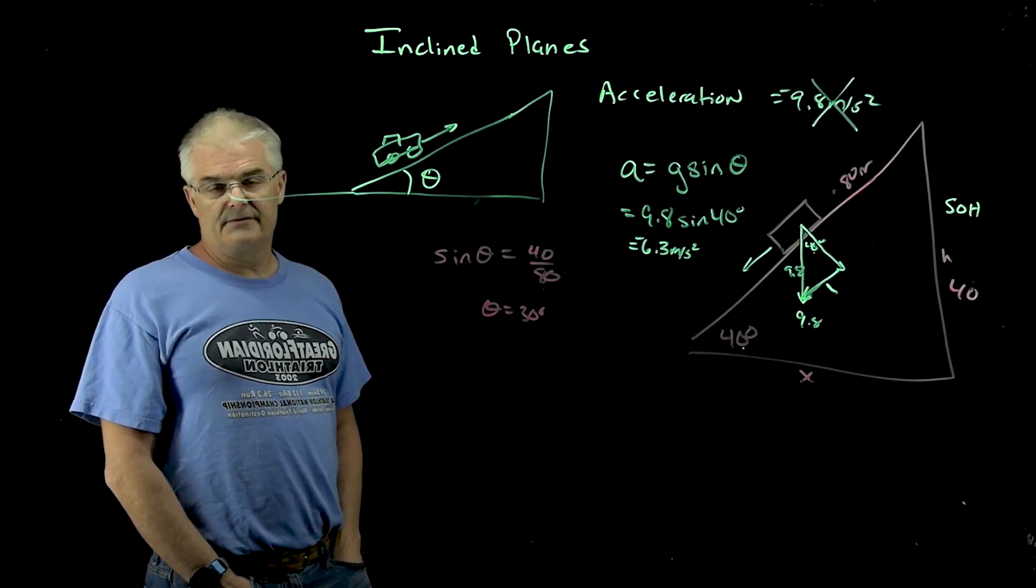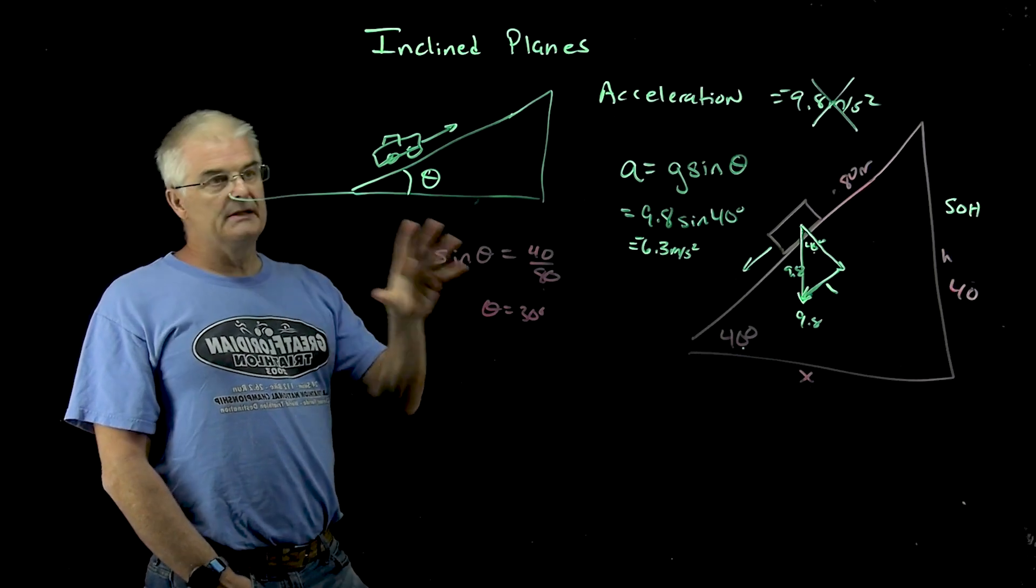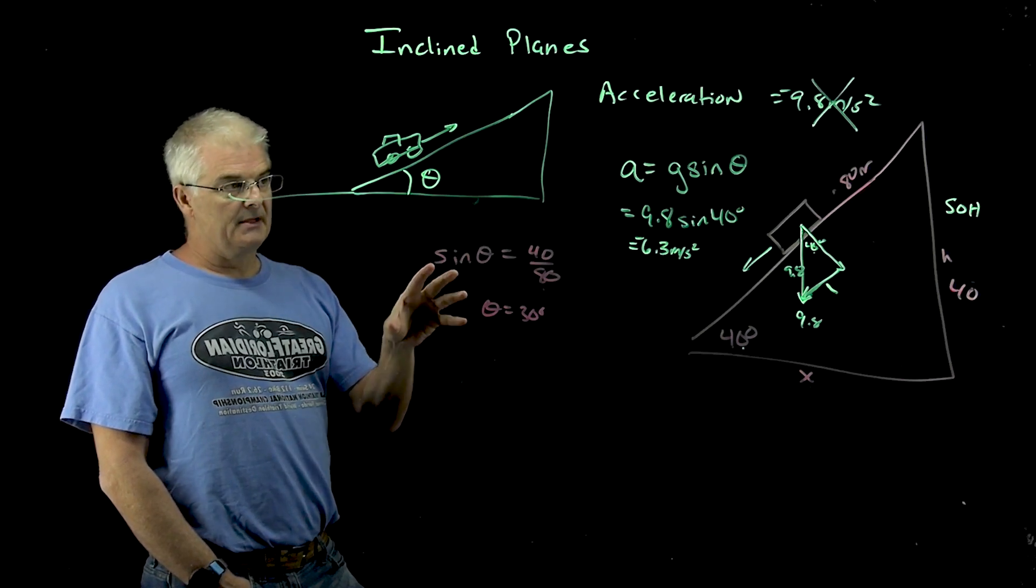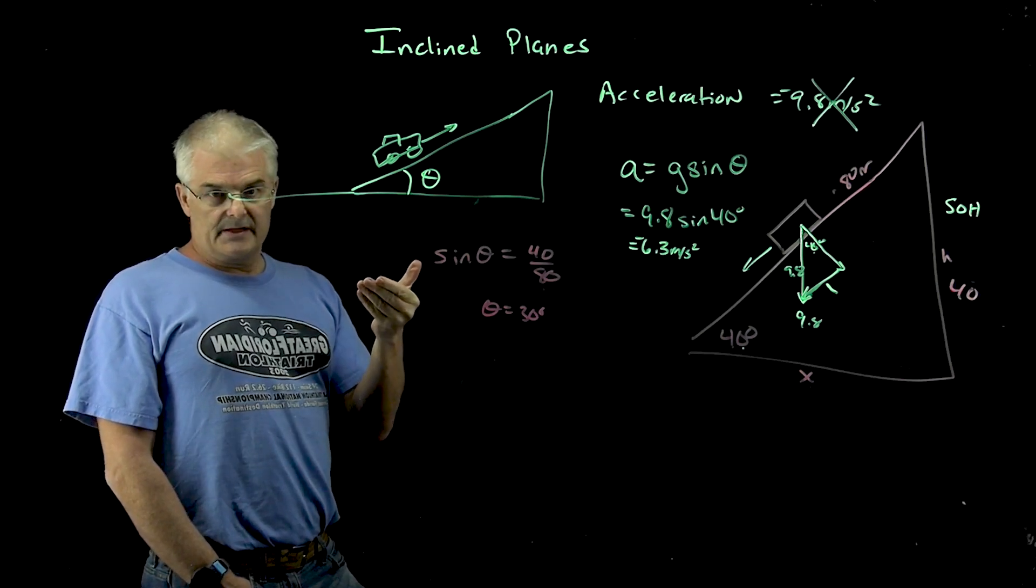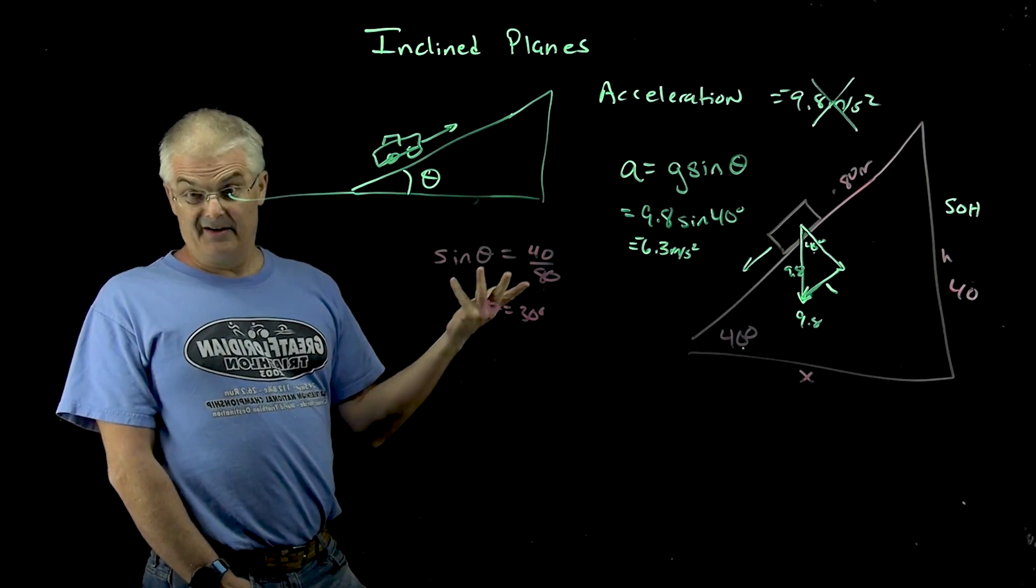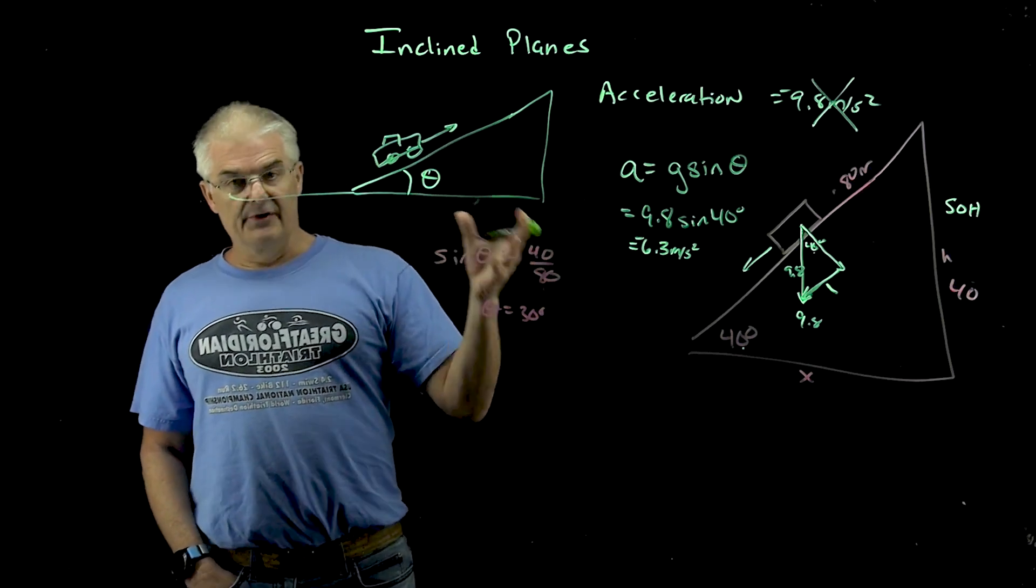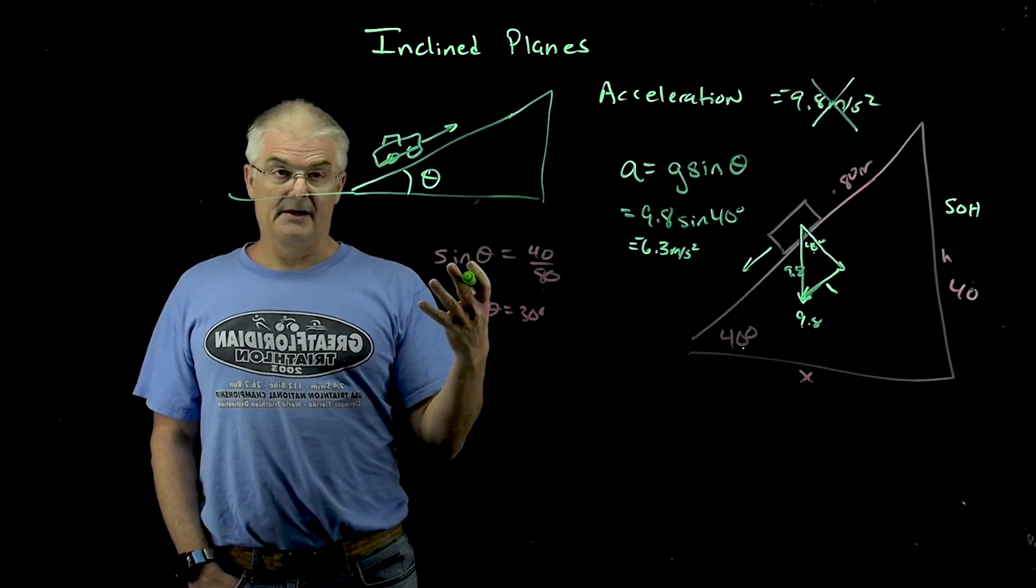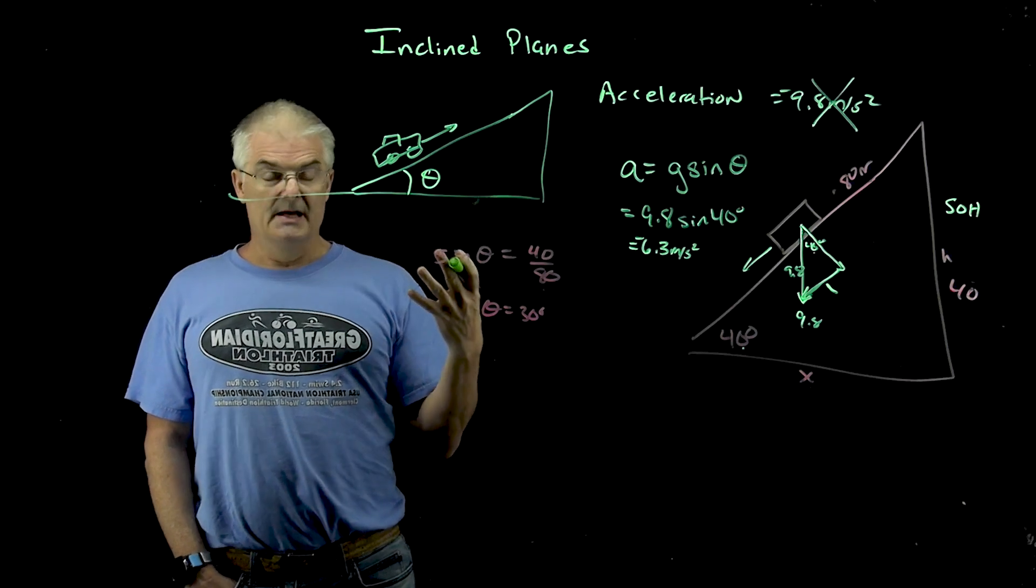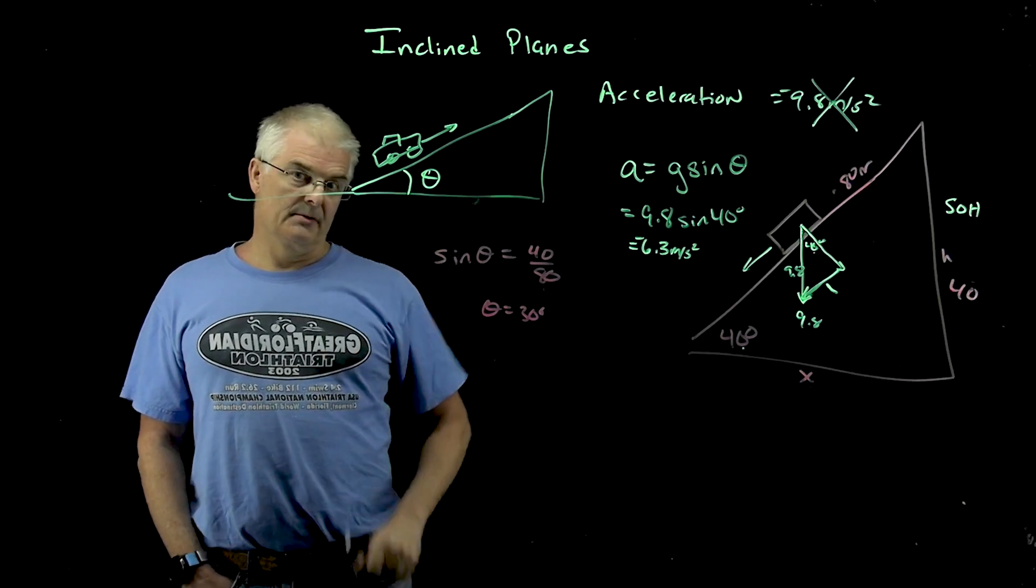We'll do in the next video just a problem or two to make sure you understand how to do this. But the big idea for inclined planes is the acceleration is not 9.8 anymore. It's just g sine theta. And once you know that, you can then solve the other problems you're going to see, the kinematics problems, using the three key kinematics equations that we've learned in previous videos. Houston, we know the problem.